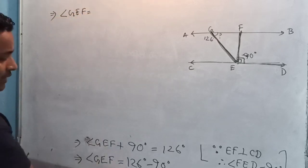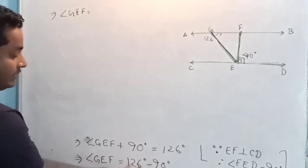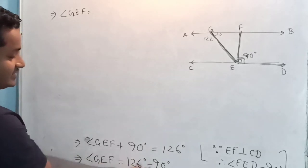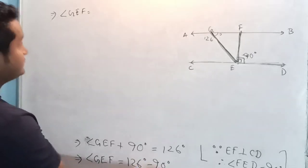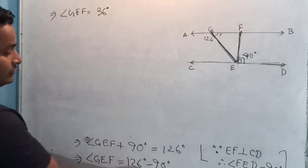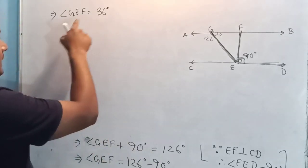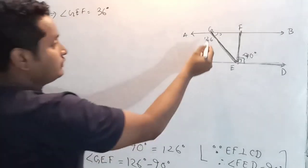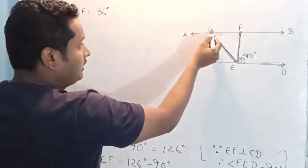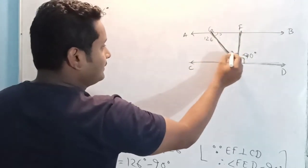So it's about 126 degrees minus 90 degrees. So 126 degrees minus 90 degrees is 36 degrees.